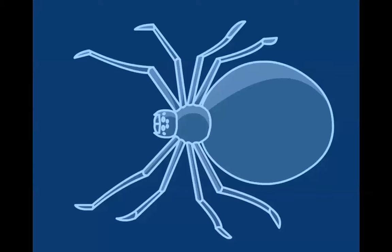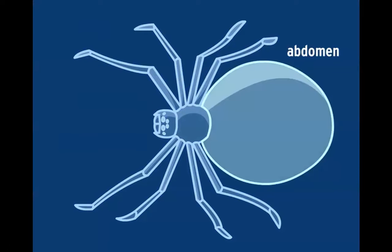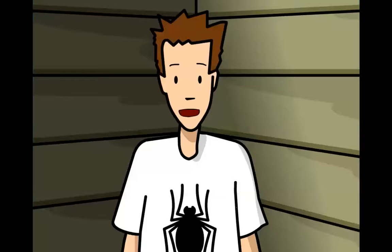A spider's body is divided into two sections. Here we have the cephalothorax — it's made up of the head and thorax. Four pairs of legs are attached to the cephalothorax; that's eight legs in all. Most spiders also have eight eyes, although some have fewer. This part is called the abdomen. You'll find many of their organs here, along with specialized glands that produce silk. The silk is a liquid in their body, but it goes solid when it comes into contact with the air, becoming an elastic, incredibly strong line of silk.